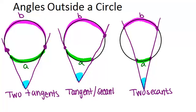...then the relationship is the bigger arc minus the smaller arc divided by 2 will always equal the angle. And this works in all three cases, that the big arc minus the smaller arc divided by 2 will give you the measure of the angle.